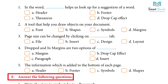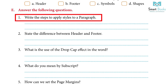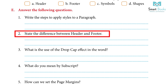Answer the following questions: 1. Write the steps to apply styles to a paragraph. Answer: Choose the text that needs formatting — the style is applied to the entire paragraph if you place your cursor within one. To sample a style, on the home tab point to it. Click the more option if you don't see the style you are looking for, then choose a style. 2. State the difference between header and footer. Answer: A header is the top margin and a footer is the bottom margin of each page. A footer is text positioned at the bottom of a page, while a header is text positioned at the top. Details such as title, chapter, heading, page numbers and creation date are inserted in these spaces.